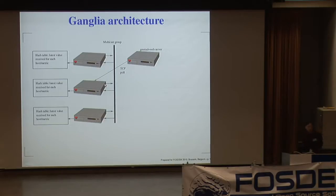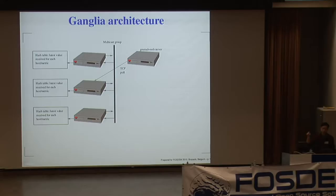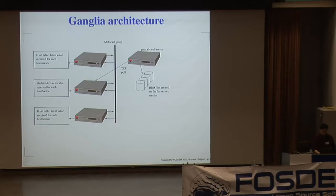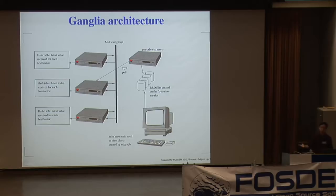The gmetad server and web server aggregate all the data. In a multicast environment, gmetad can pull from any one node in the group for redundancy — if one host goes down, you can go to another. Basically, you pull one host in the group and you get all the information about all the hosts. RRD files are created to store the metrics, and from the web browser you can see the graphs and charts to see what your installation is doing.